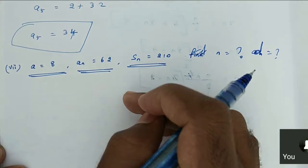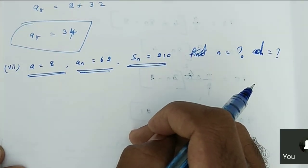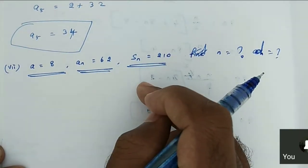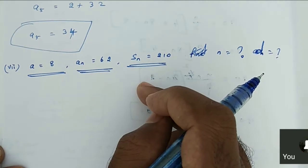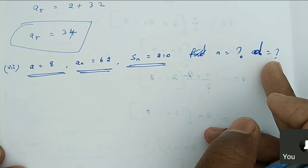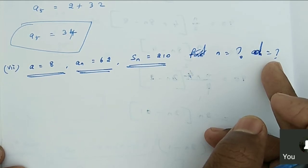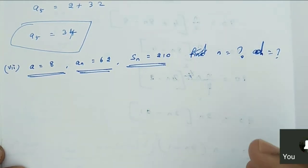Chari, okay. When we substitute the S_N value, then what will we get? In S_N, 2A and D should be there. So D also we need to find. Instead of D, we can use A_N. Excellent, very good! Instead of putting a D value, you can go with A_N. Then A plus A_N.